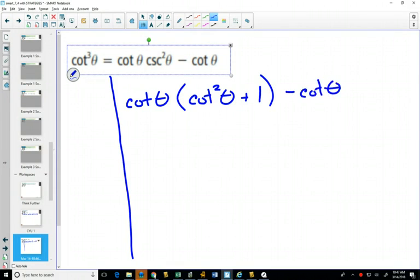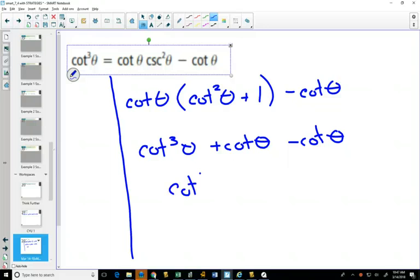And the reason this is a nice strategy in this question is because with that substitution, everything is in cotangents. There's a good chance if everything is in cotangents that I'll be able to simplify and solve this. Can you see if you distribute this, you'll get cotangent cubed theta plus cotangent theta. And then we have a minus cotangent theta. Well, those will just cancel out.